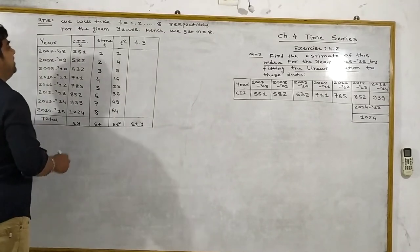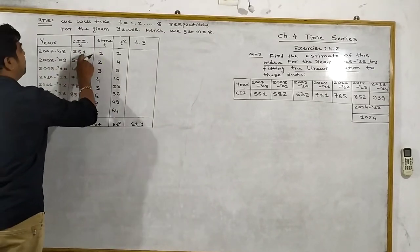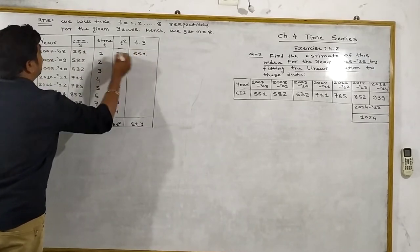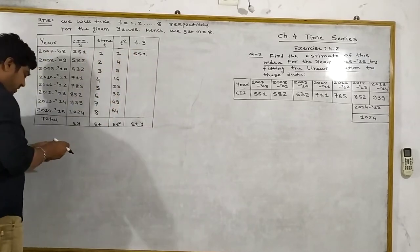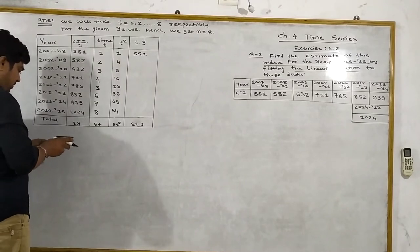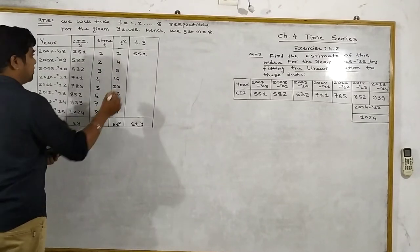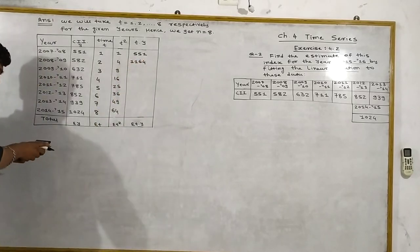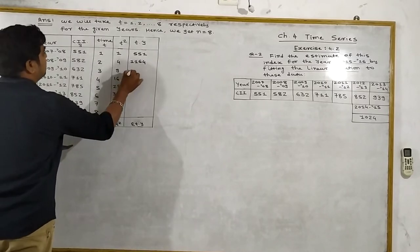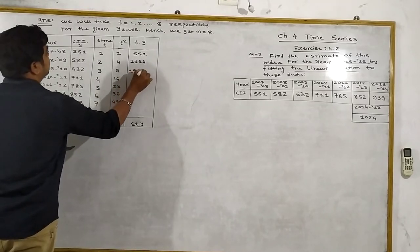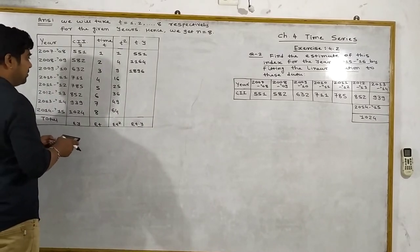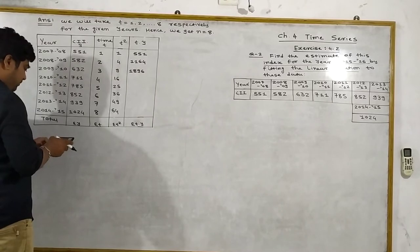Now for TY, Y into T: 551 into 1 equals 551. Then 582 times 2 equals 1164. 632 times 3 equals 1896. 711 times 4 equals 2844.